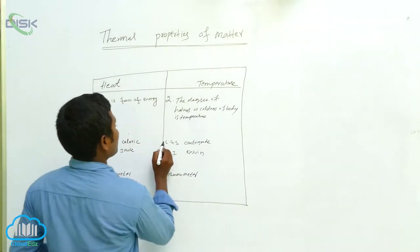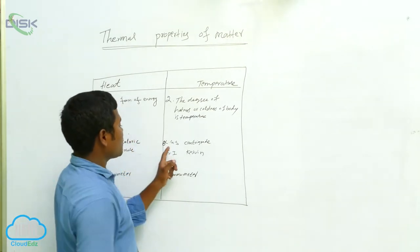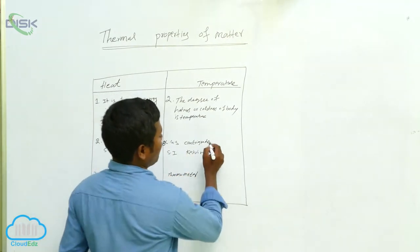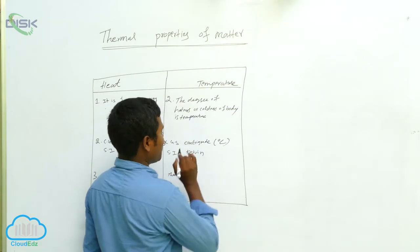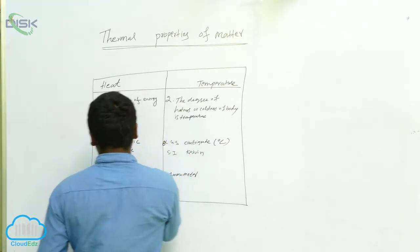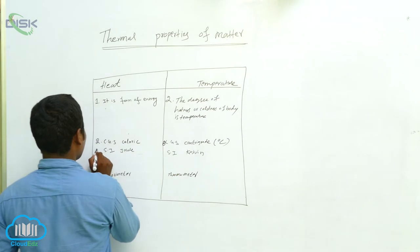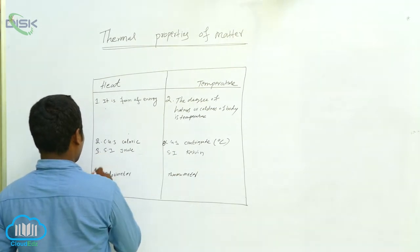Measuring: Joule. Okay, next. Second point - CGS, how we are measuring: centigrade, generally we will write like this, zero degrees centigrade. Next, SI measurement: Kelvin. This is, we can say, this is the third point. Next, this is fourth.